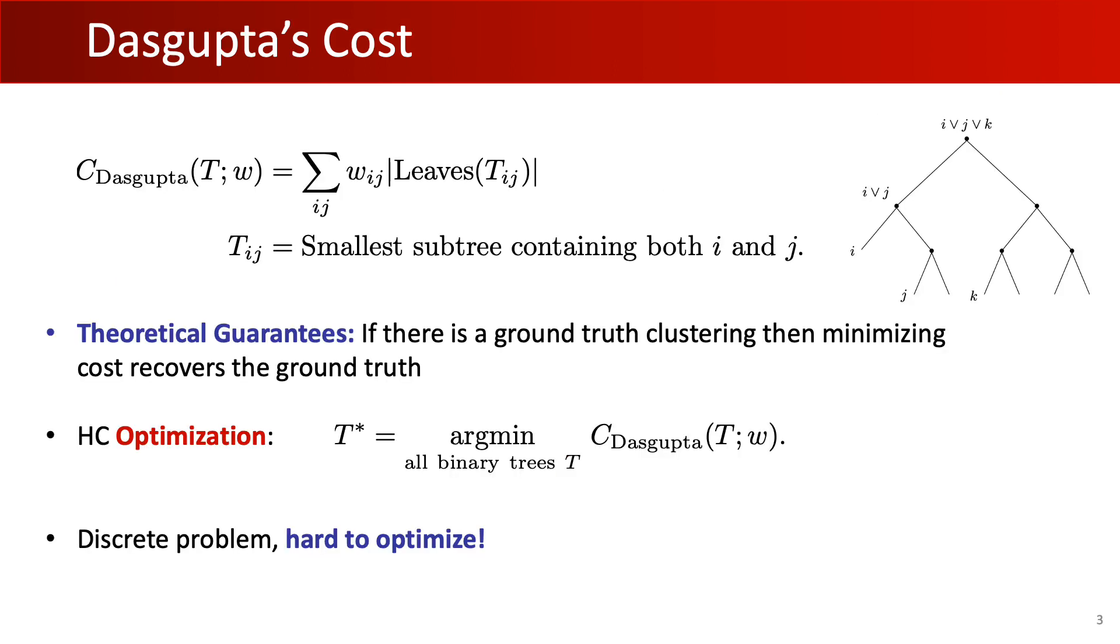Dasgupta proposed a cost function such that minimizing this cost yields a good clustering tree. Intuitively, this cost favors trees that match points with a high similarity score WIJ first in the hierarchy. That is, their corresponding subtree should be small.